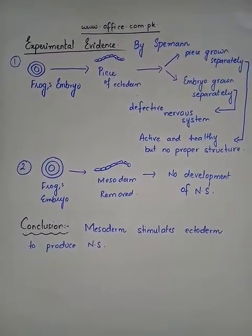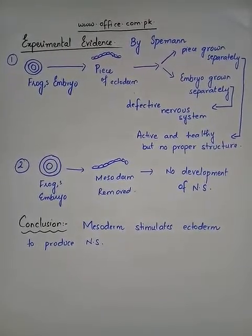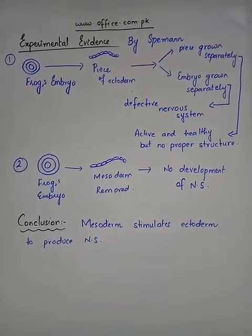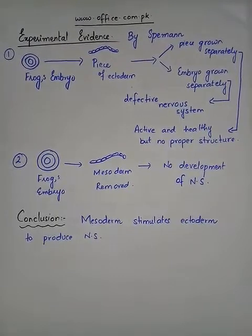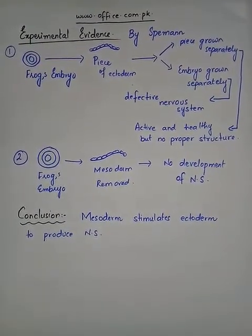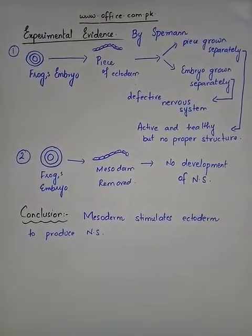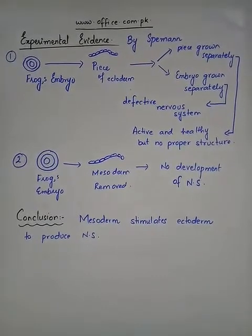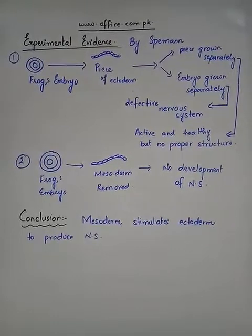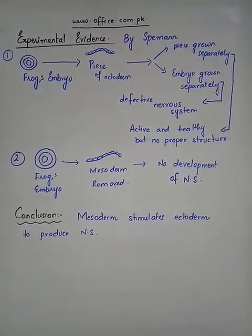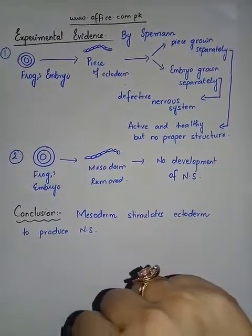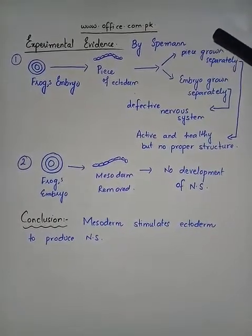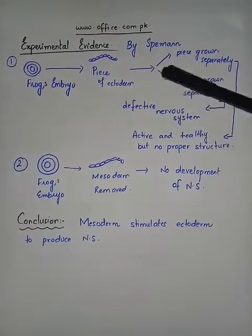We have seen that mostly the experiments on embryonic development are performed by Spemann. He also performed another experiment to experimentally verify the process of differentiation and to see how one part affects or controls the proper differentiation of another part. These experiments were performed on the embryo of frog. He performed two series of experiments. In the first series, he took a frog's embryo and removed a piece of ectoderm from it. The piece was grown separately, whereas the embryo without that piece was also grown separately.